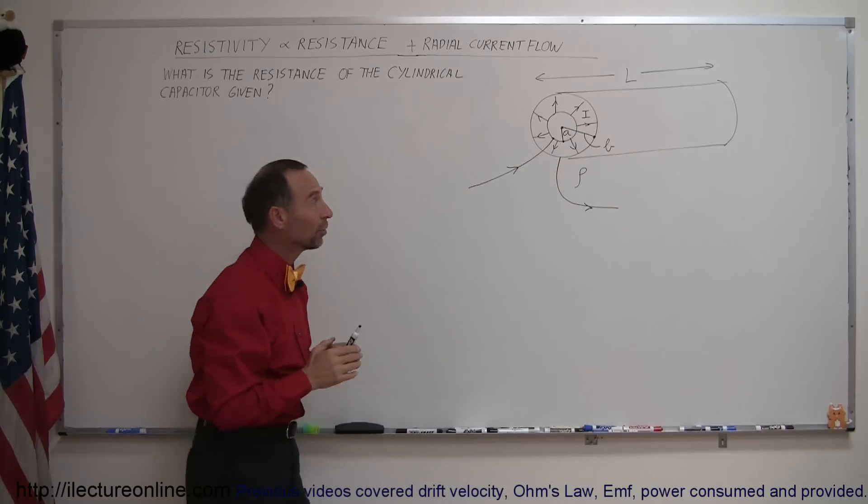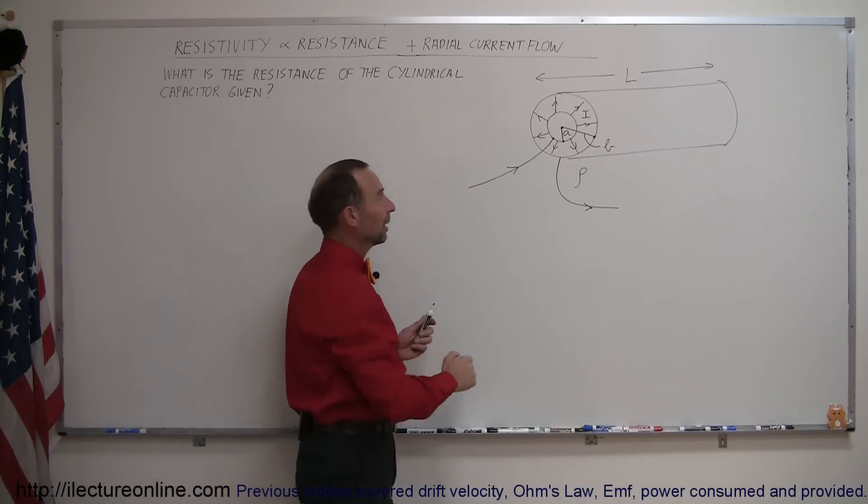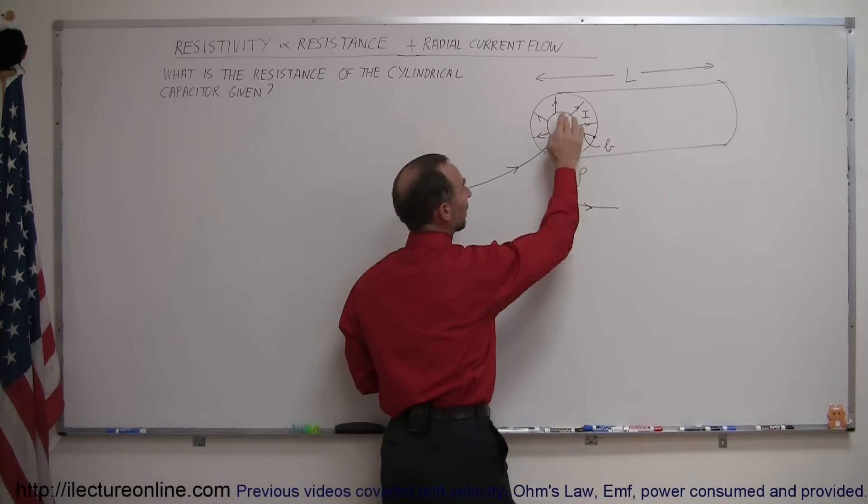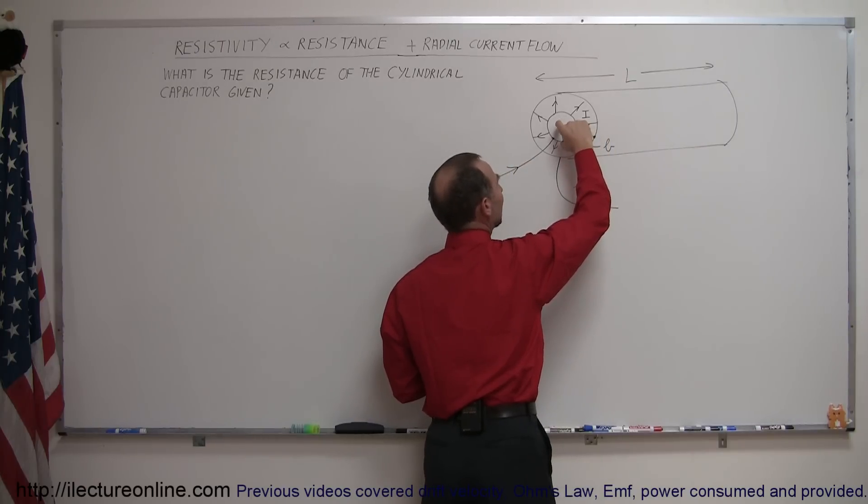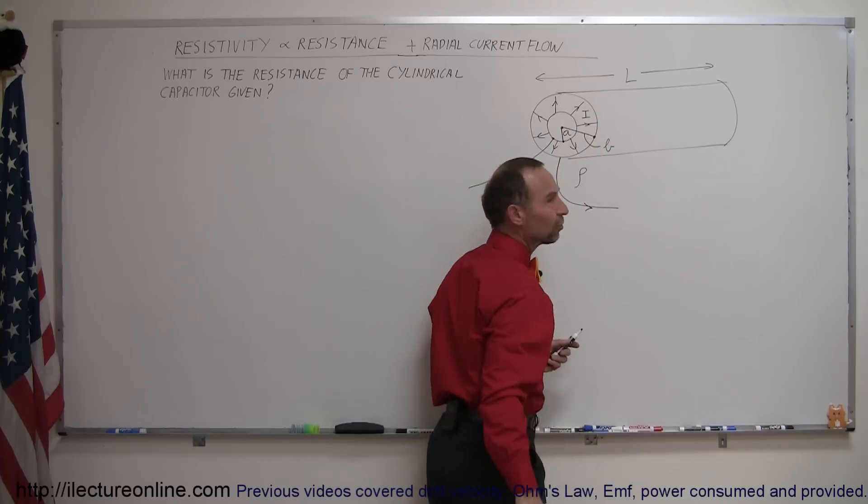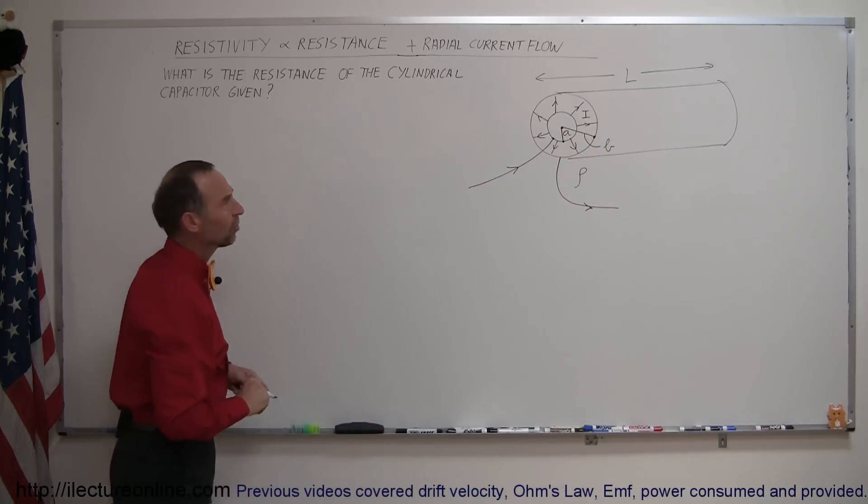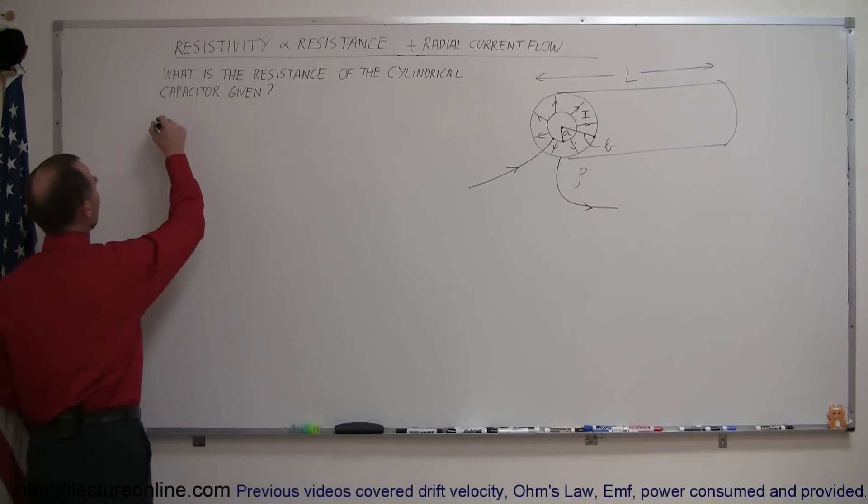You can see that the current would flow from inside to outside in the radial direction. What would be the resistance of this resistor if it has resistivity rho, length L, inner radius A, and outer radius B? So R equals question mark.